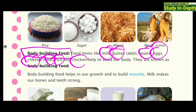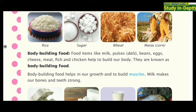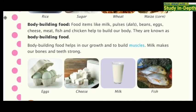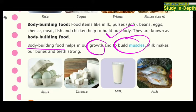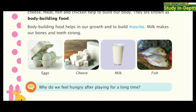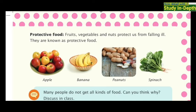Next is body-building food. Foods like milk, pulses, beans, eggs, cheese, meat, fish, and chicken come in this category. Through body-building food, it helps to build our body, grow, and build muscles. If you drink milk every day, you can make your bones and teeth strong. Don't forget to drink milk at night.